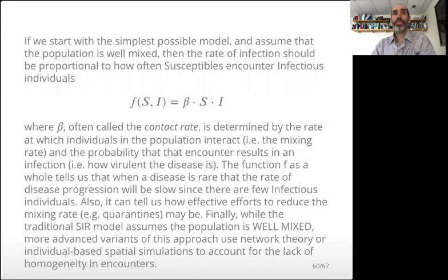So if we want to start with the simplest possible model for infection, we can model that just as depending on susceptibles infected and this parameter beta, which is often called the contact rate, which determines the rate at which individuals in the population transmit from one to another.